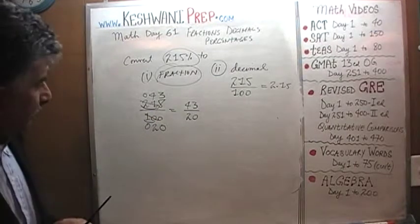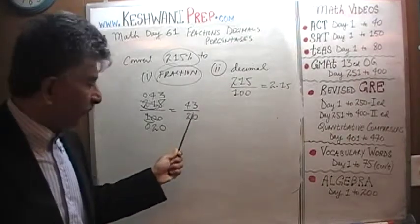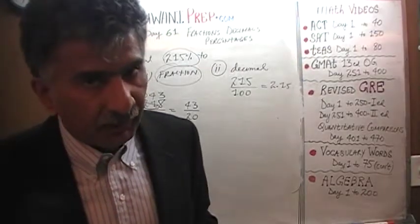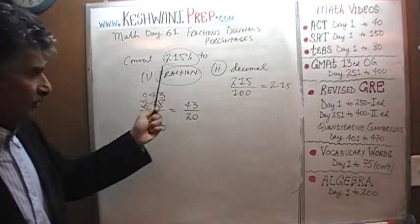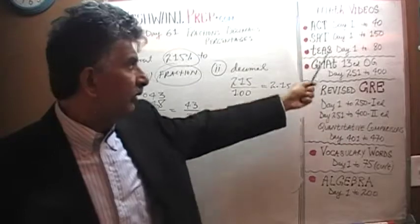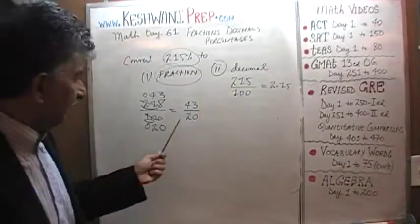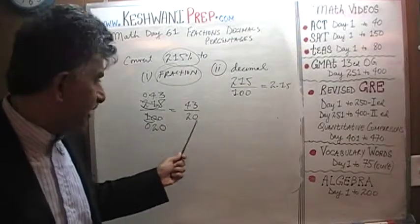43 over 20 and I think that's about the end of it. We can't go any more than that. The only other thing that we have to do here is because the numerator happens to be more than the denominator it turns out that it is actually an improper fraction so in fact we do have to go one more step because remember the answer choices when they ask you something like this, these are multiple choice exams that you're preparing for SAT, ACT, GMAT, GRE.